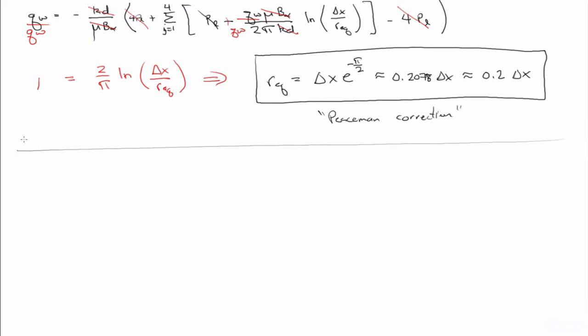So, now that we have REQ, if we have a rate constraint, that is, Qw is fixed or prescribed.